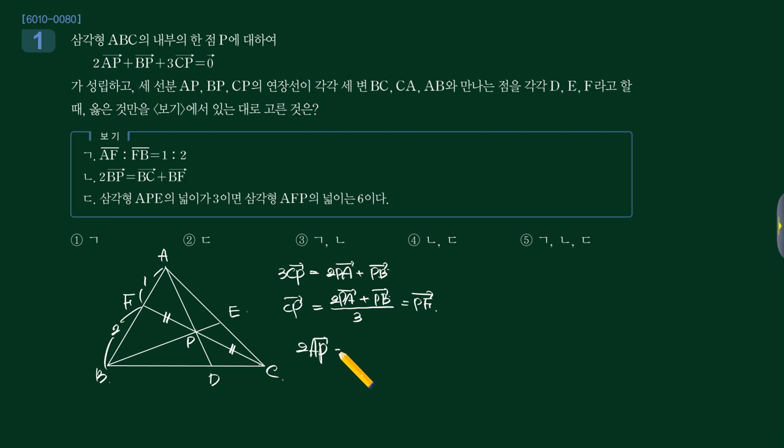2의 AP + 1의 BP + 3의 CP는 0. 요 길이는 논외로 쳐도 얘를 넘기거나 얘를 넘겨서 생각하면 요 비는 그대로 유지가 될 거 아냐. 여기 숫자가 3이 넘어오든 뭐가 넘어오든가.